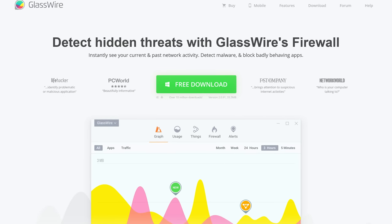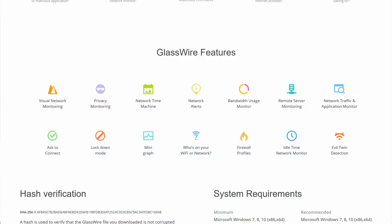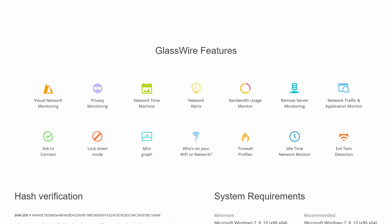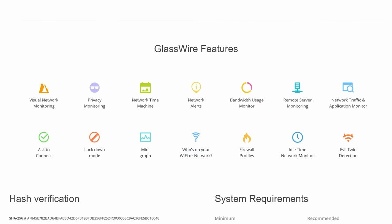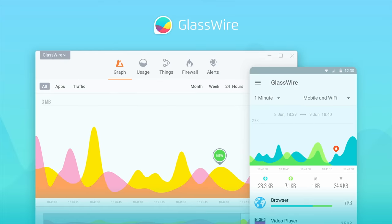GlassWire lets you instantly see your current and past network activity. You can detect malware and block badly behaving apps on your PC and Android device, and you can use offer code LINUS to get 25% off GlassWire at the link below.